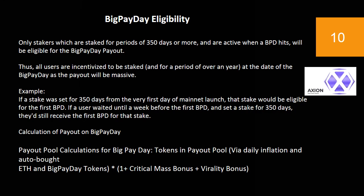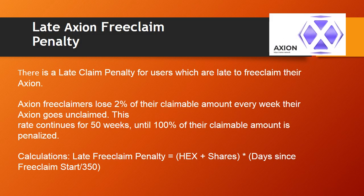Calculation of payout on Big Pay Day. Payout pool calculations for Big Pay Day: tokens in payout pool via daily inflation and auto-bought ETH, and Big Pay Day tokens multiplied by (1 + critical mass bonus + virality bonus). Late Axion Free Claim Penalty: there is a late claim penalty for users who are late to free claim their Axion. Axion free claimers lose 2% of their claimable amount every week their Axion goes unclaimed. This rate continues for 50 weeks, until 100% of their claimable amount is penalized. Calculation: late free claim penalty = HEX shares × (days since free claim start / 350).